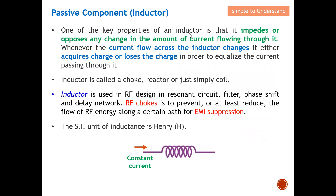One of the key properties of an inductor is that it opposes any change in the amount of current flowing through it — its role is to ensure a constant current. Whenever the current flowing across the inductor changes, it either acquires charge or loses charge in order to equalize the current passing through it. When there is an increase or decrease of current, it either acquires more charge or loses charge so as to maintain a constant current. An inductor is also called a choke, reactor, or simply a coil.